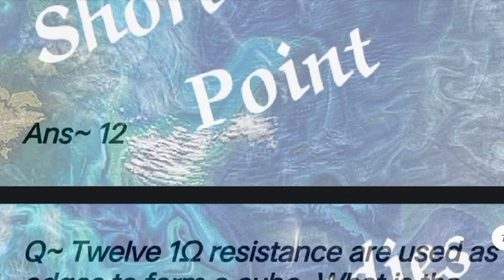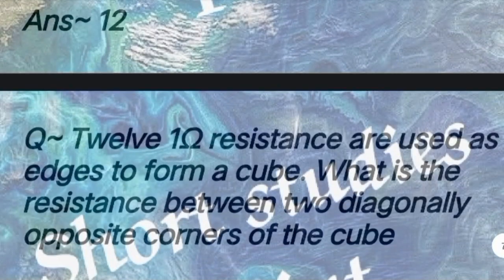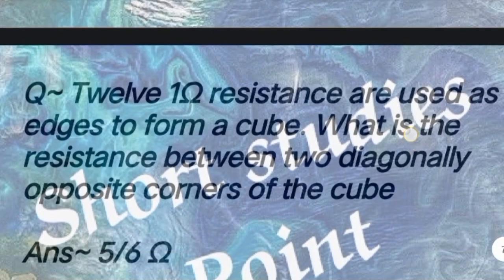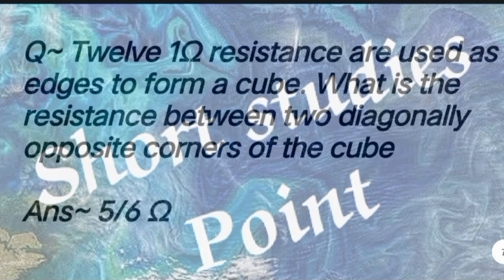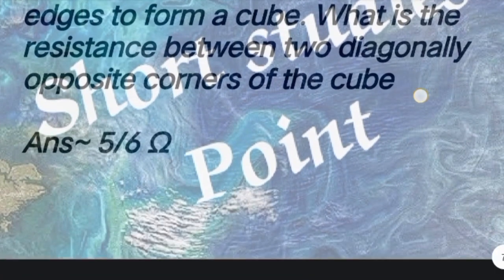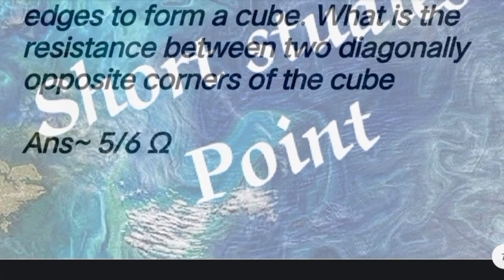Next question: The number of possible spanning trees for 3 nodes A, B and C is answer: 3. Next question: 12 one-ohm resistances are used to form a cube. What is the resistance between totally diagonal opposite corners of the cube? Answer: 5/6 ohm.